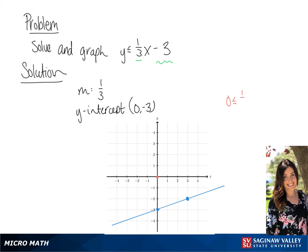Now we're going to test the point 0, 0, which will give us 0 is less than or equal to 1/3 times 0 minus 3. This will give us 0 is less than or equal to negative 3, which is not true.